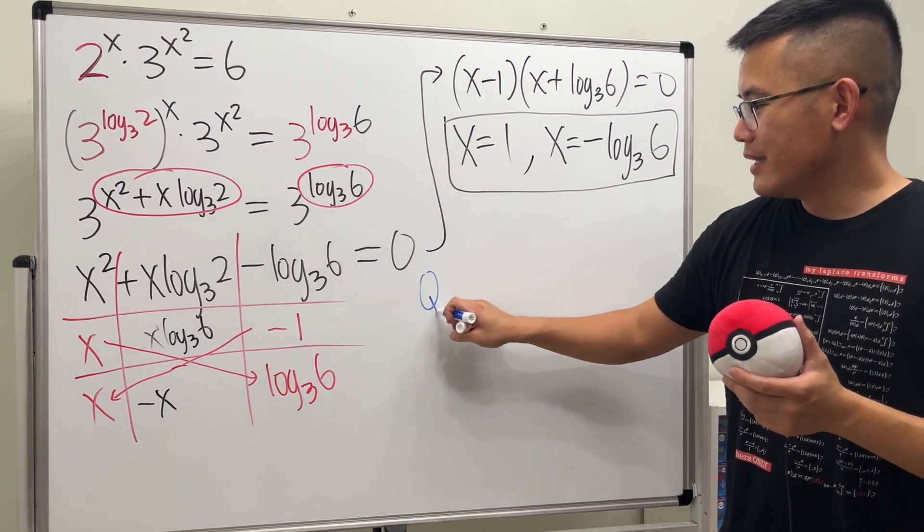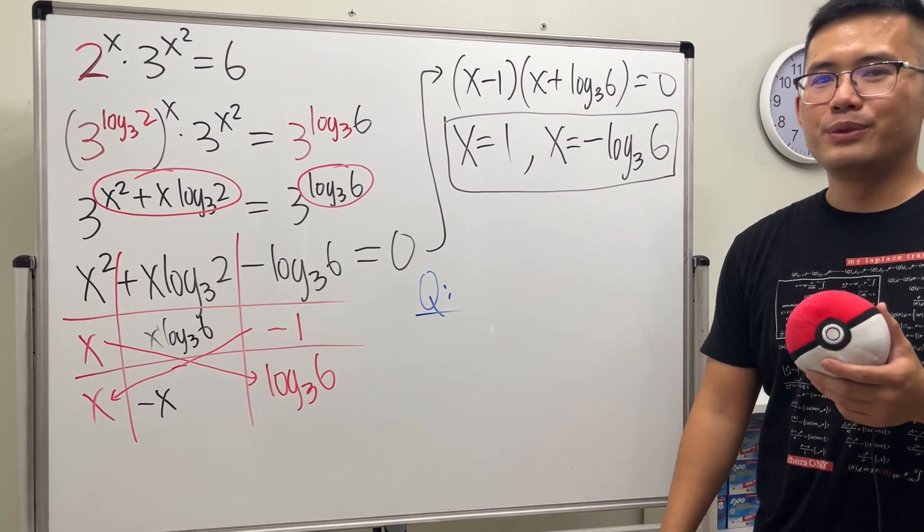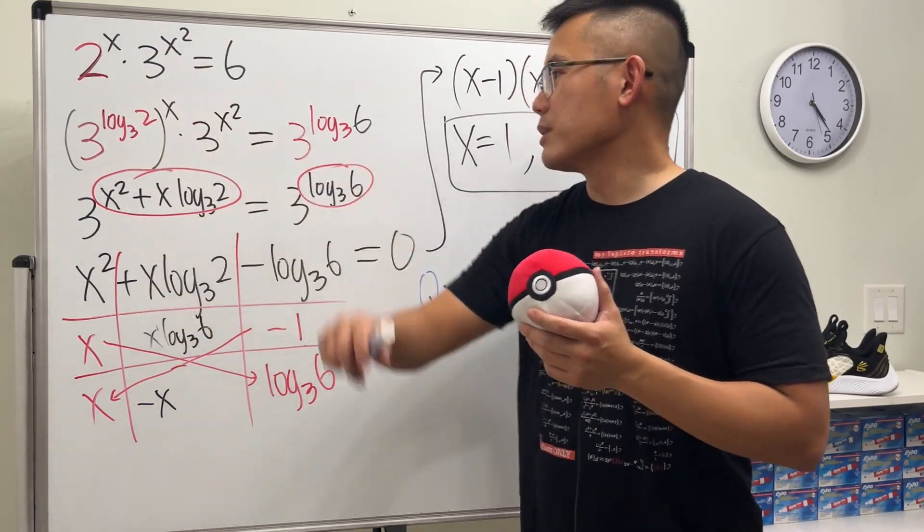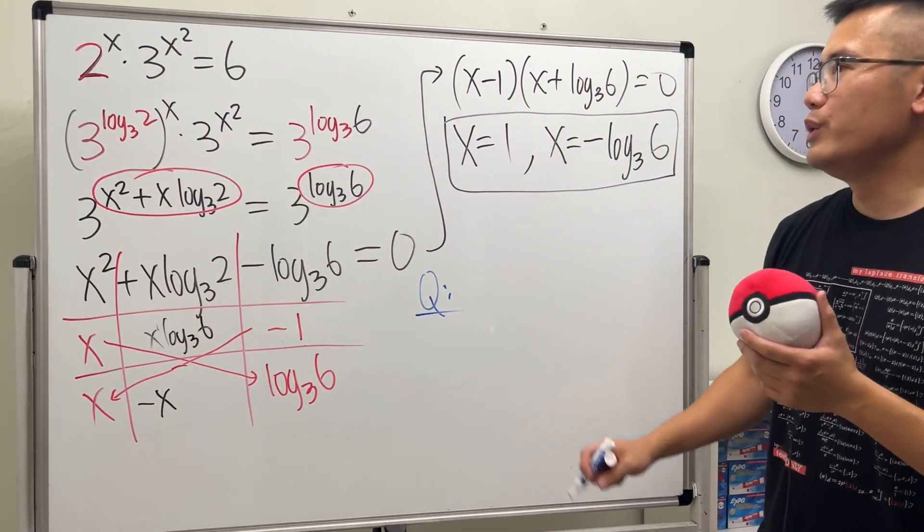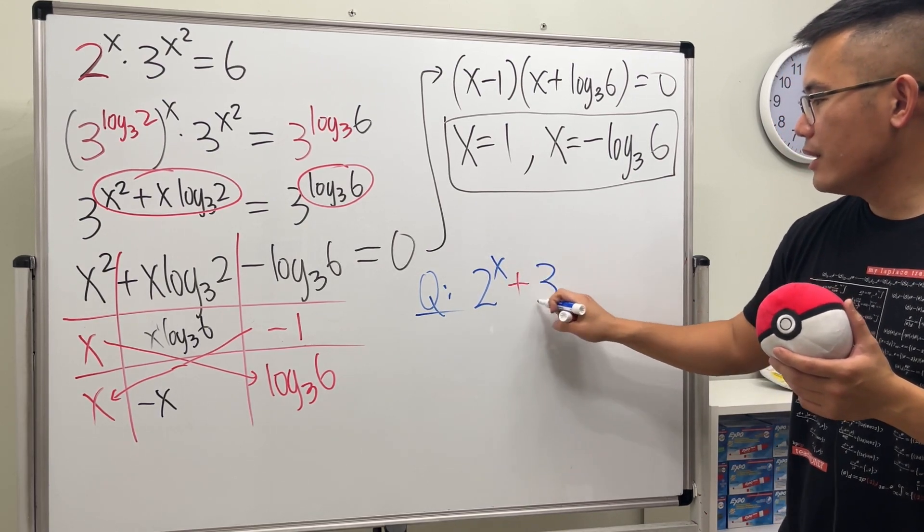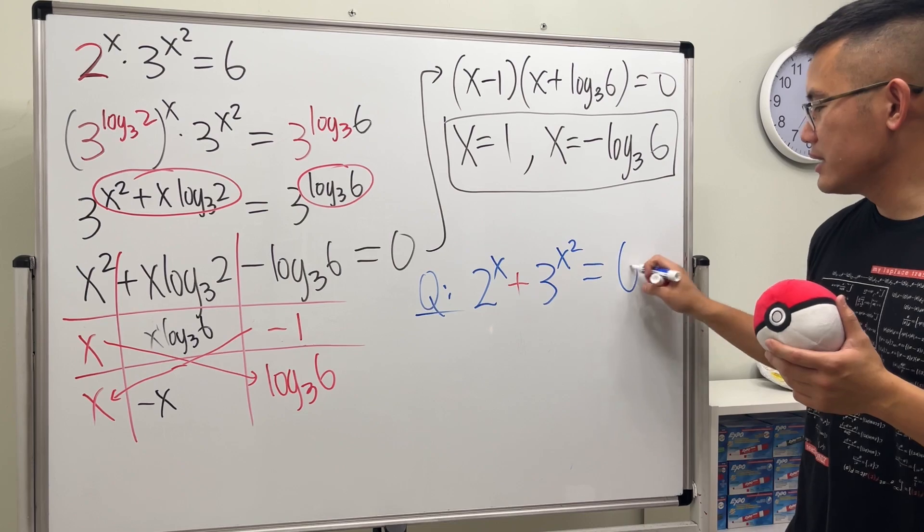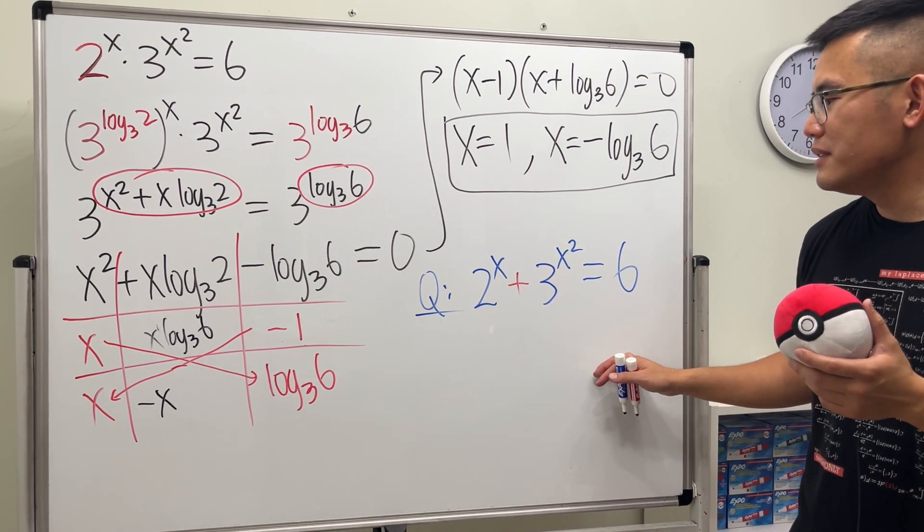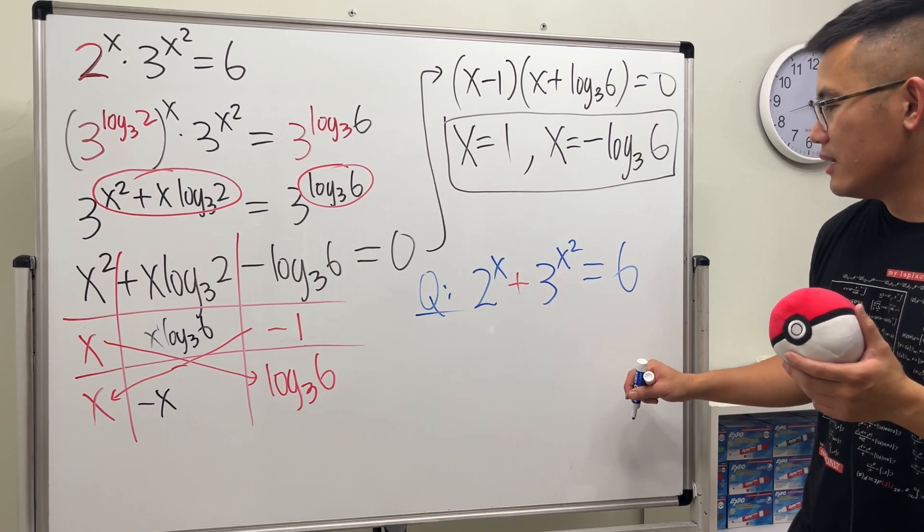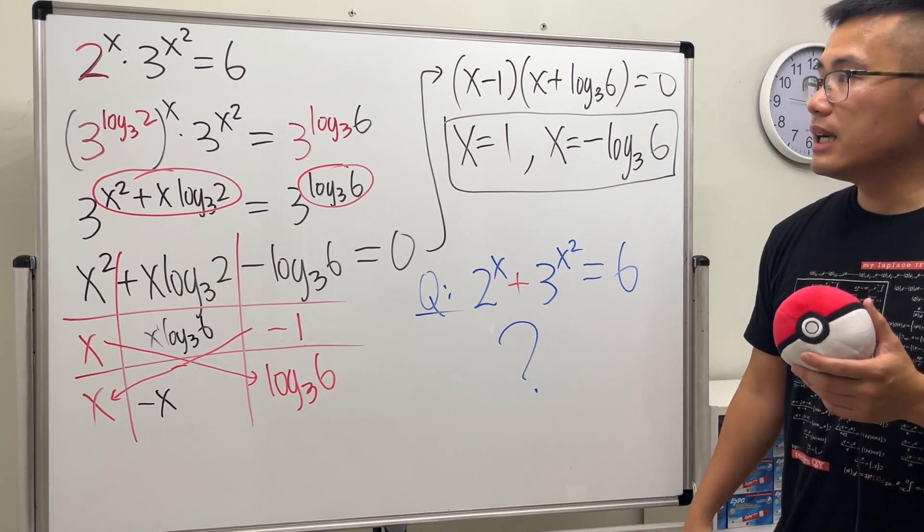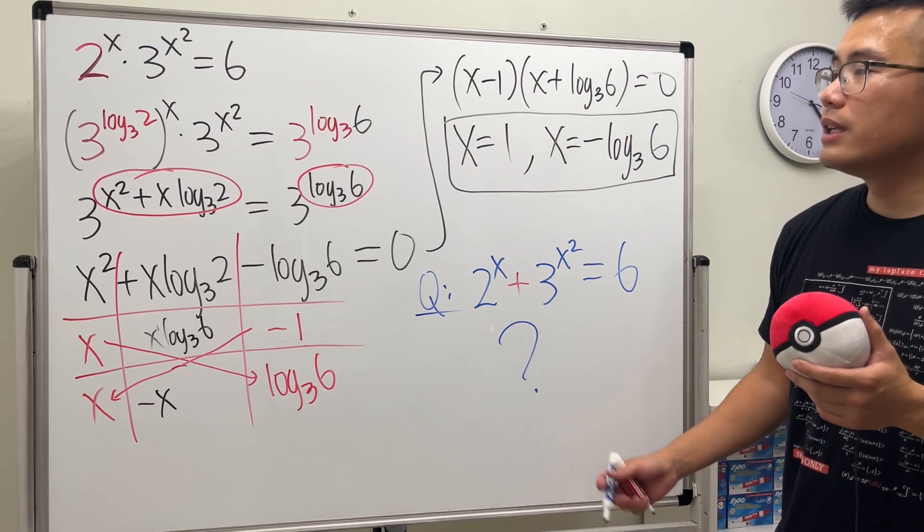I do have a really interesting question I would like to propose though. This right here works out pretty nicely because we have a multiplication, but what if we have 2 to the x plus 3 to the x square and that equals 6? In fact I don't think there's any nice way to solve this kind of equation. I have no idea, so I'll just put on a question mark.